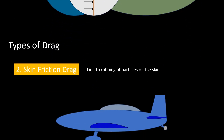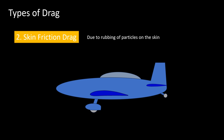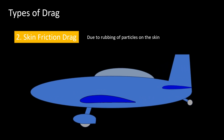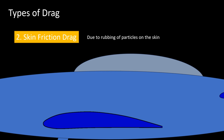Then comes the skin friction drag. This drag is due to the rubbing of air molecules along the surface of the airplane. Intuitively, it is proportional to the wetted area of the airplane. If you submerge your aircraft in a water tank and remove it, all the surface area that gets wet is called the wetted area. It also depends on the skin surface roughness. The value for this drag is highly dependent on how much of the flow over the aircraft component is laminar and how much of it is turbulent. Due to this, it is often difficult to analyze skin friction drag.